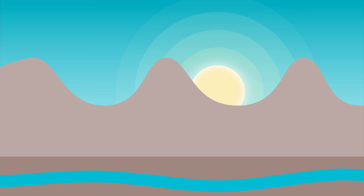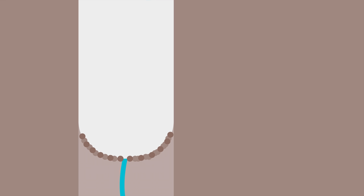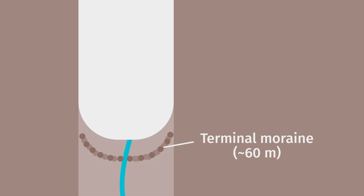Spectacular waterfalls often drain the hanging valley into the main trunk U-shaped valley. Near what was once the snout or end of the valley glacier, end moraine complexes may form. The retreating glacier will leave behind its end moraine as an arc-shaped deposit of glacial till about 60-ish meters in height. This end moraine marks the furthest extent of the glacier, so we call it a terminal moraine.